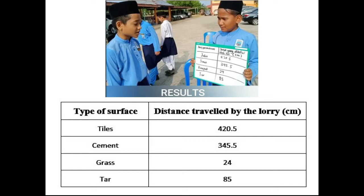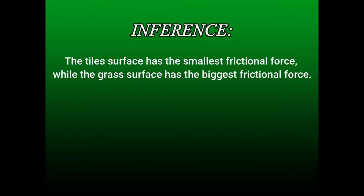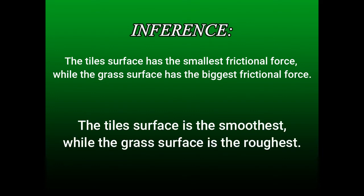What is your inference? The tile surface has the smallest frictional force, while the grass surface has the biggest frictional force. Or you can say it like this: the tile surface is the smoothest, while the grass surface is the roughest.